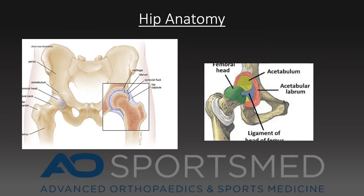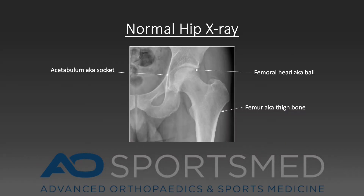The hip is composed of a ball and socket joint. The ball is called the femoral head and the socket is called the acetabulum. This is an x-ray of a normal hip. The femoral head and neck form the ball. The socket is formed by the acetabulum, and as you can see, there is joint space left between the ball and socket for the cartilage.